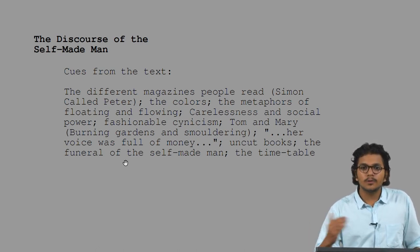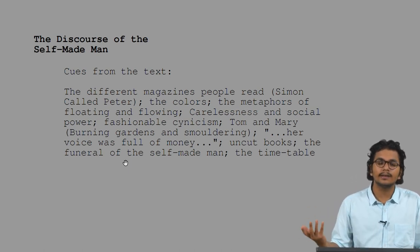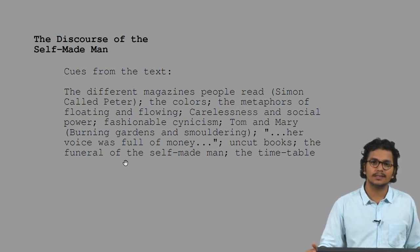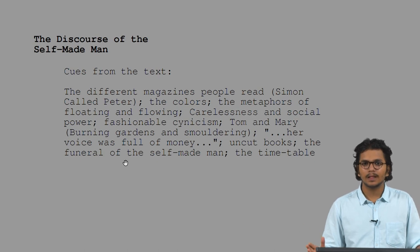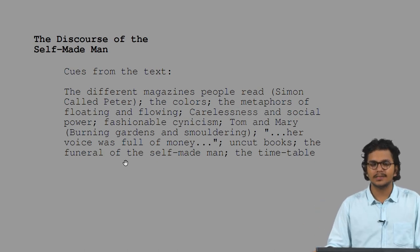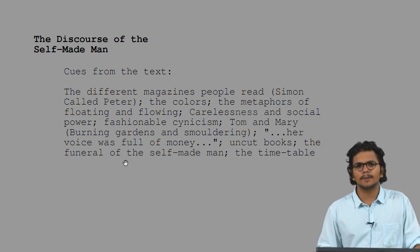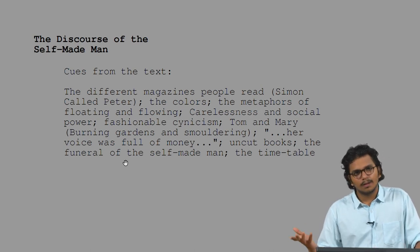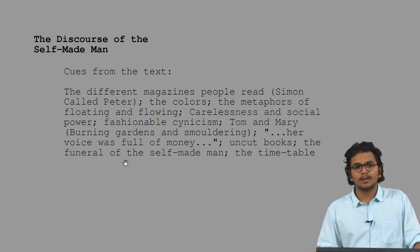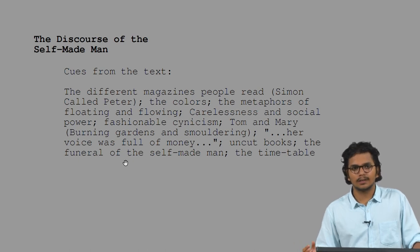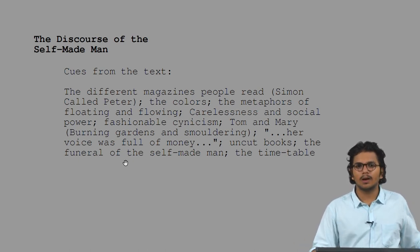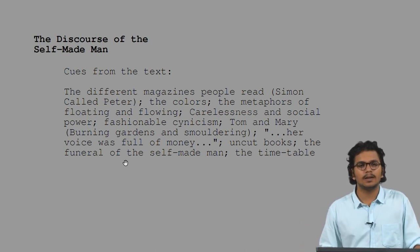As opposed to these people, we see in Gatsby's house that there is a huge library within the mansion which houses so many books. But very ironically, the leaves of these books are uncut, showing us that this is all a facade of this self-made man character.